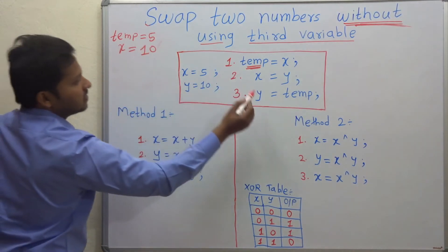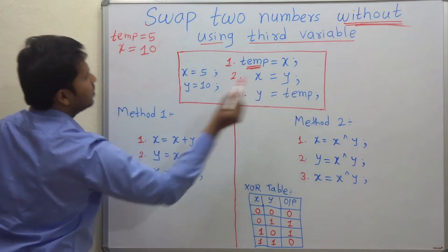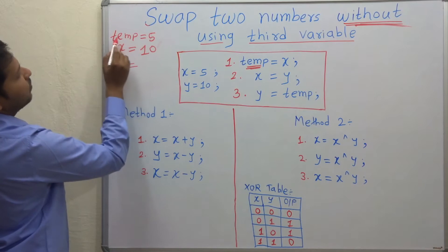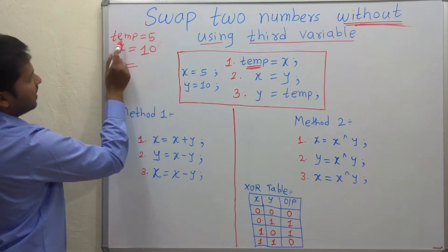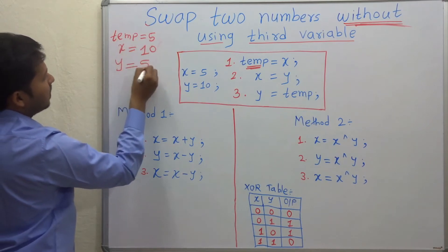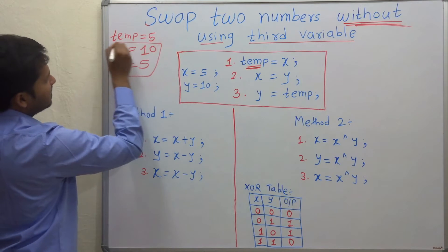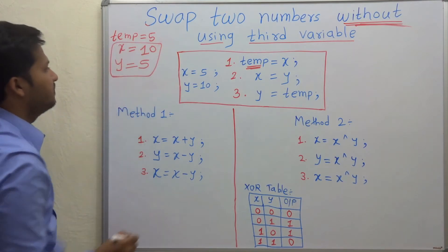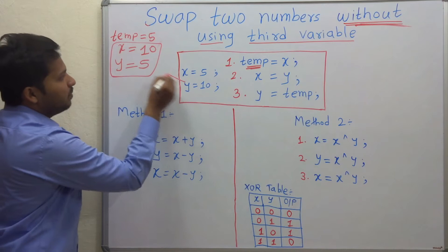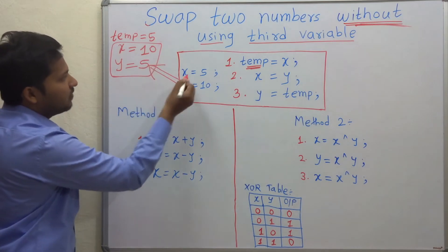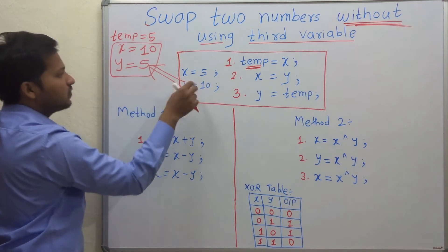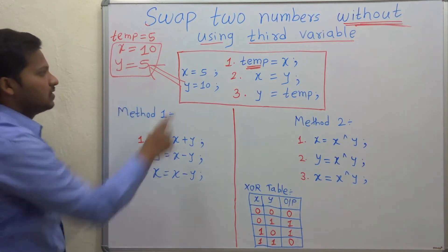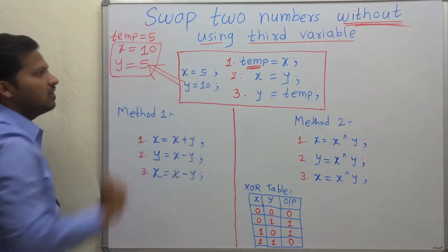The third statement is y is equal to temp. So y is equal to temp — the value of temp is 5. Now see the result: x is equal to 10 and y is equal to 5. That means the value of x and y is successfully swapped. Now x is 10 and y is 5, so the values are swapped.